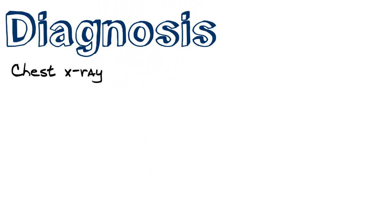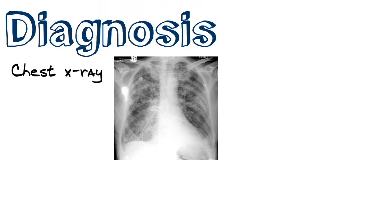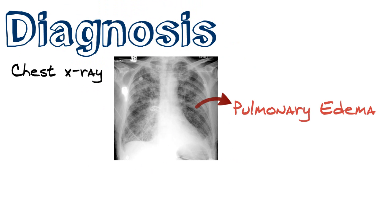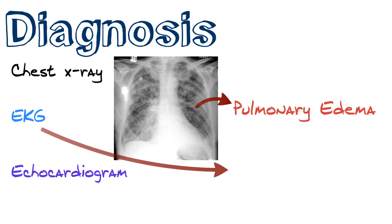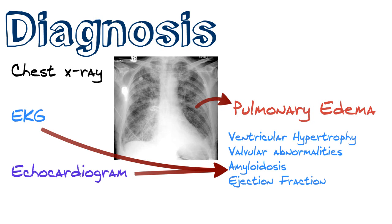How do we diagnose diastolic heart failure? First, obtain a chest X-ray. You can see bilaterally fluffy infiltrates, indicating likely pulmonary edema — a result of the heart not being able to push out adequate volume due to poor filling of the left ventricle. Second, obtain an EKG, which will tell you if there's left ventricular hypertrophy, consistent with diastolic heart failure. An echocardiogram will also be helpful — both can indicate valvular abnormalities, amyloidosis, and assess the ejection fraction.